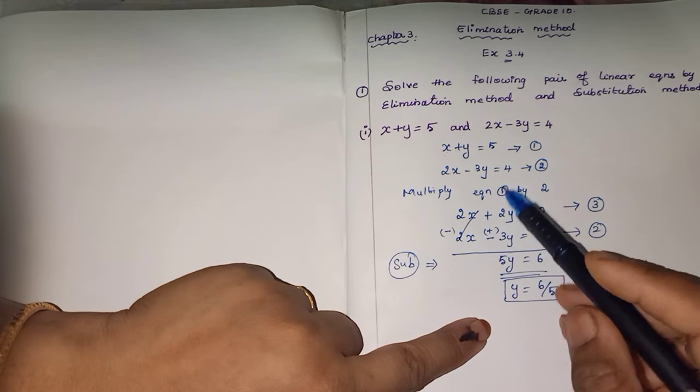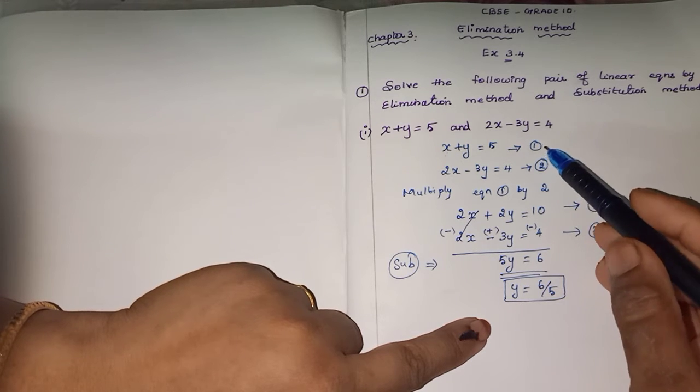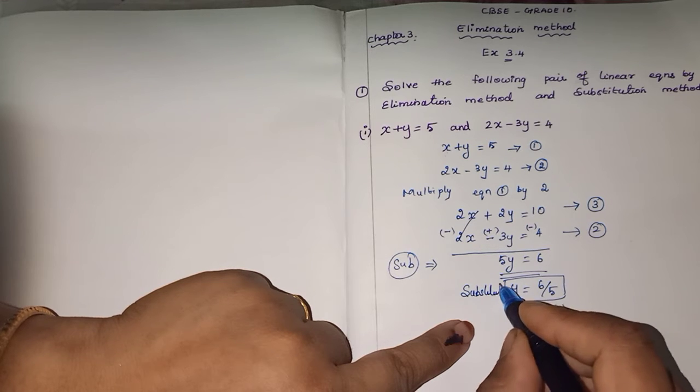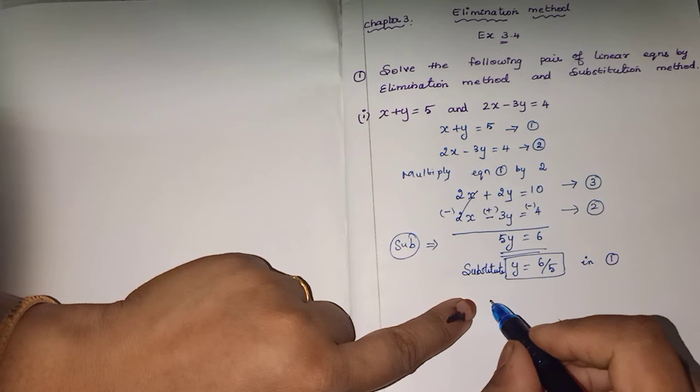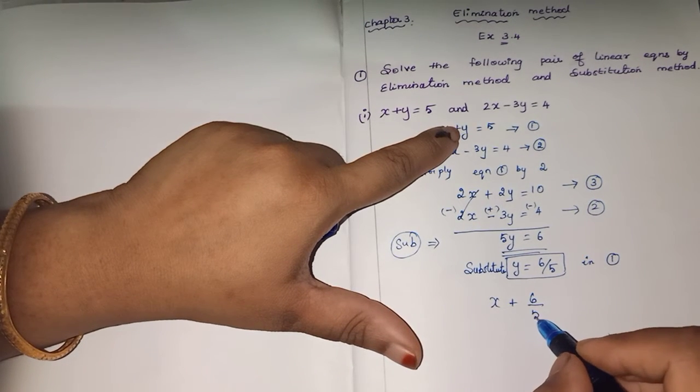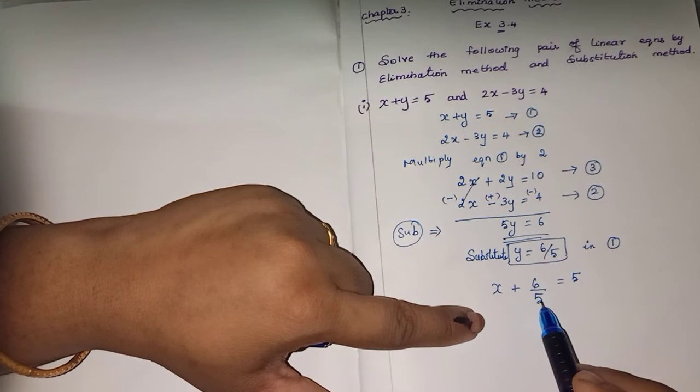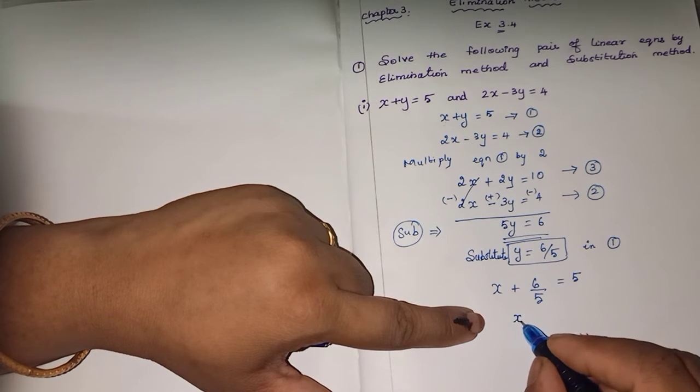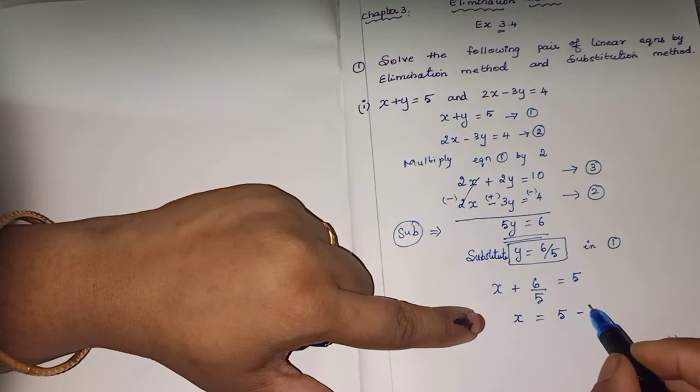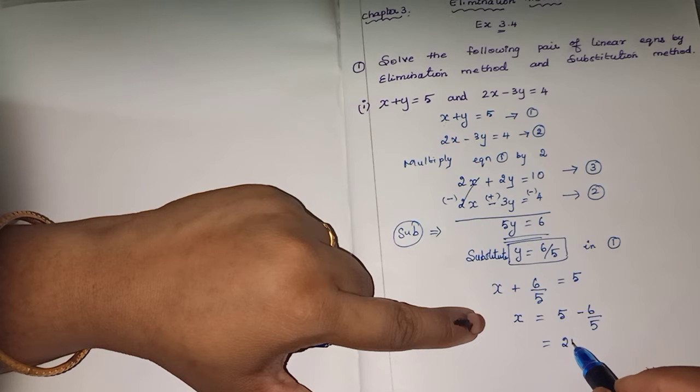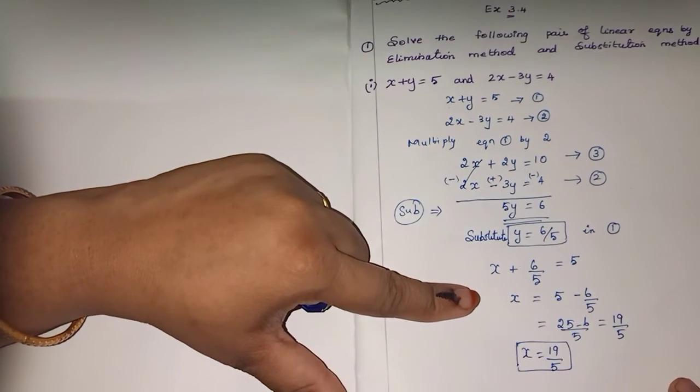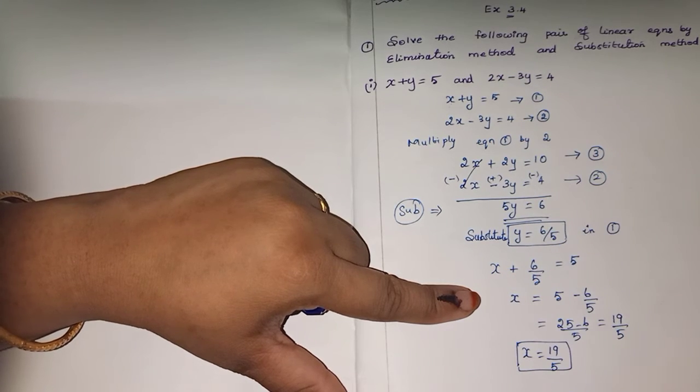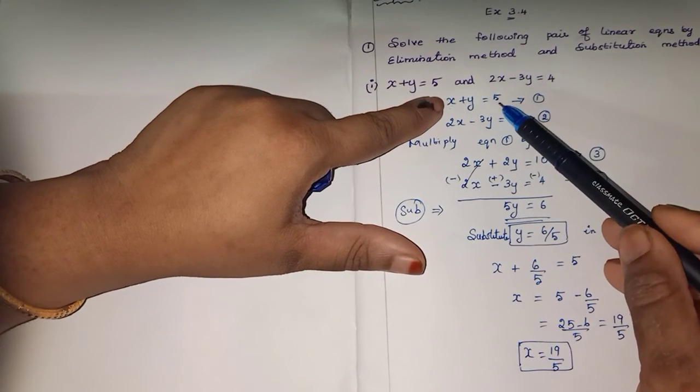By multiplying the first equation by 2, we got y. Now substitute y equals 6 by 5 in the first equation: x plus y equals 5. Transpose 6 by 5 to the right side. So x is equal to 5 minus 6 by 5. Take LCM: 25 minus 6 by 5, the answer is 19 by 5. So x value is 19 by 5.